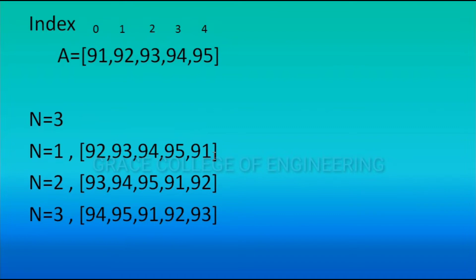When n = 2, two positions are moved — 91 and 92 both move to the last position. When n = 3, three values 91, 92, 93 are moved to the last position. This is the circulation concept. Let's see how we can execute it.